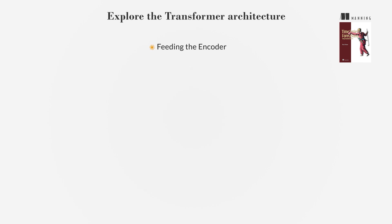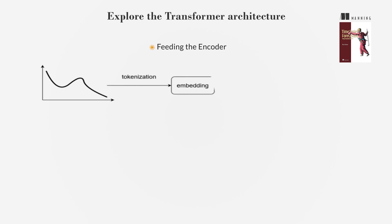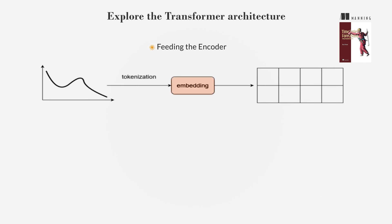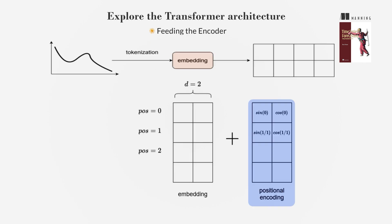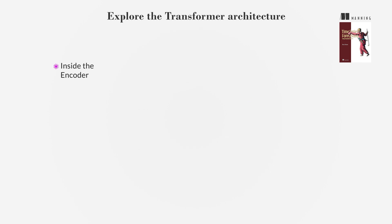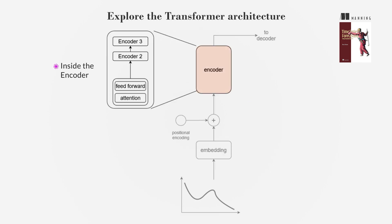When feeding the encoder, raw time series data is tokenized and transformed into an abstract representation through an embedding layer. Positional encoding maintains data order using sinusoidal functions. Inside the encoder, the encoder features a self-attention mechanism and a feed-forward layer, often stacked. Multi-headed attention allows the model to identify trends and patterns.